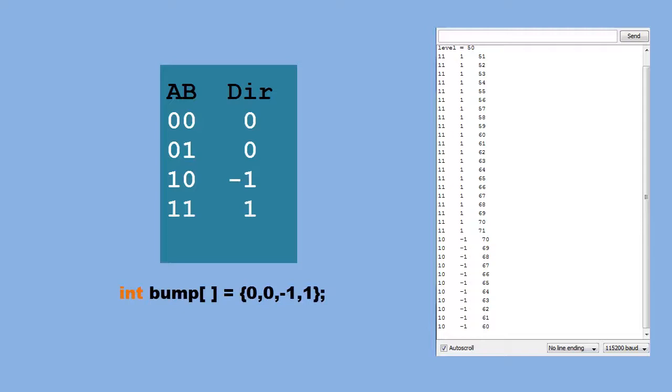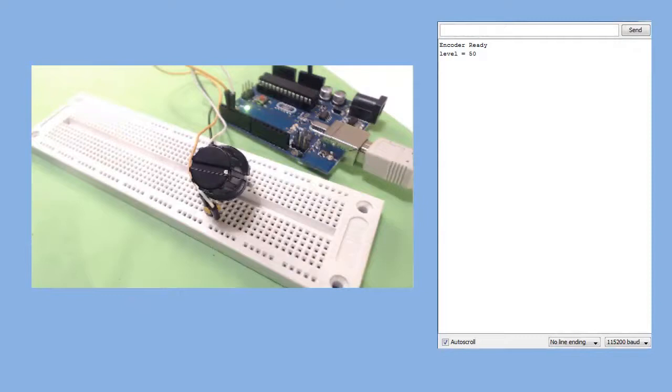This is how I set up the table in an Arduino sketch. We set up an array of integers called bump. They have to be integers because one of our values is a negative number. Here it is in a nutshell. When the knob turns, we quickly read both pins A and B and create a binary number out of that. We use the binary number as a pointer. We look into this array to see what value to add to our previous level. A valid reading will produce a one or a minus one. A key bounce will produce a zero.